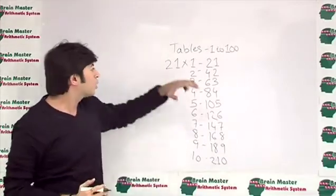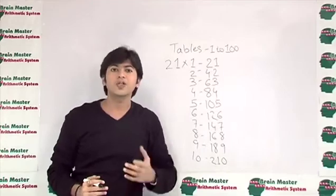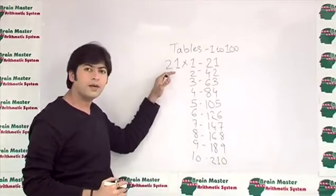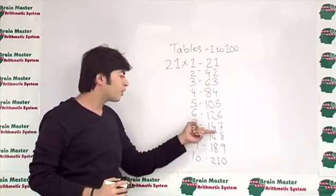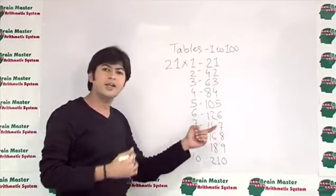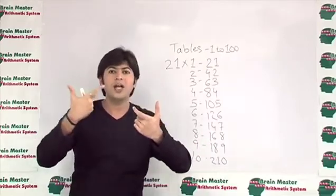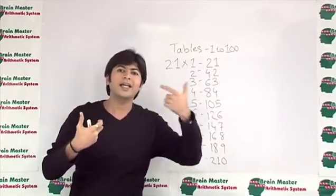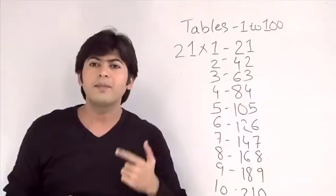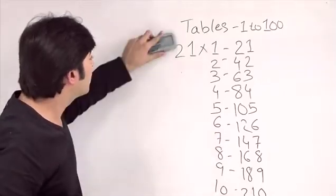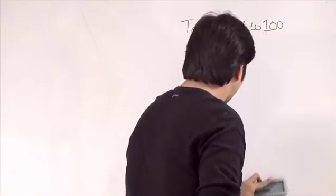So to remember this: for 21, take the two individual digits 2 and 1, write the table of 2 then the table of 1, and combine for mental calculation. For example, 21×7: 2×7=14 and 1×7=7, so the answer is 147. For 21×9: 2×9=18 and 1×9=9, giving 189. You are getting mental calculation as well.